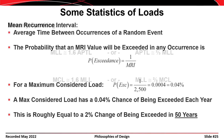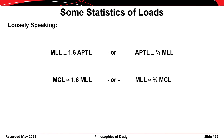We can map between load levels: the maximum lifetime load is approximately 1.6 times the arbitrary point in time load, or conversely, the APTL is about two-thirds of the maximum lifetime load. Similarly, the maximum considered load is about 1.6 times the maximum lifetime load, and the maximum lifetime load is about two-thirds of the maximum considered load. This is rough math, but statistics is approximate anyway.